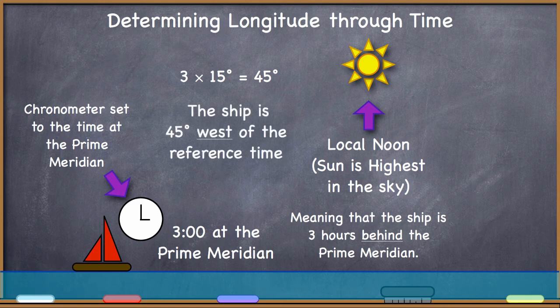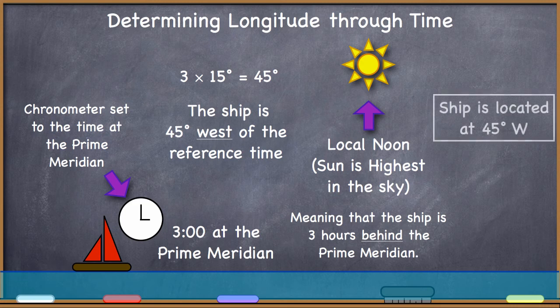Three times 15 equals 45 degrees. He's behind the reference time. The ship is therefore positioned 45 degrees west of the reference time. So if that reference time is on the prime meridian, the ship must be located at 45 degrees west. That is how they ended up determining longitude.